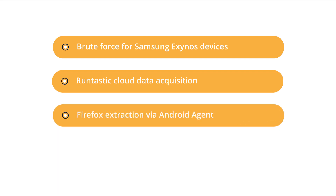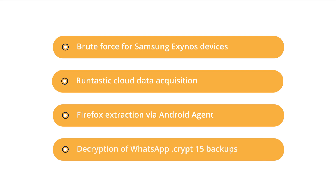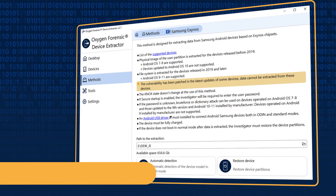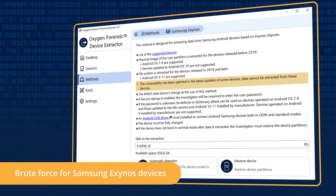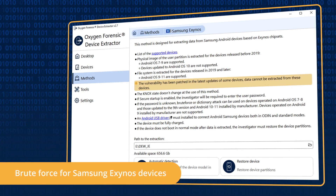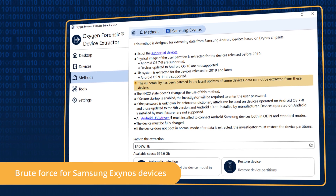You can extract Firefox browser via Android agent, decrypt WhatsApp Crypt 15 backups, and brute force passcodes to decrypt data on Samsung Exynos devices with file-based encryption.